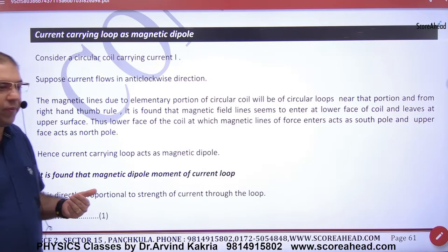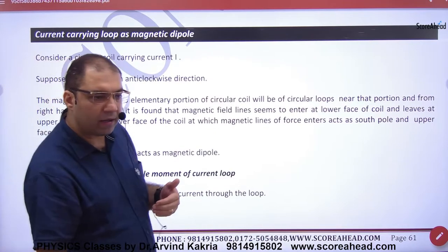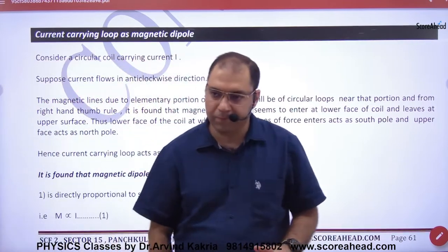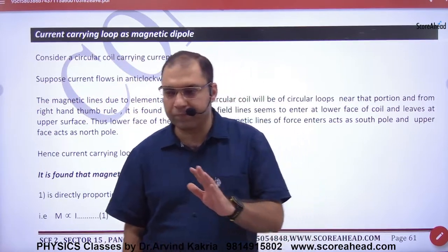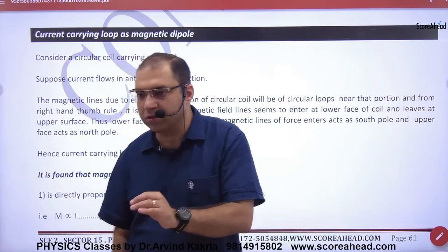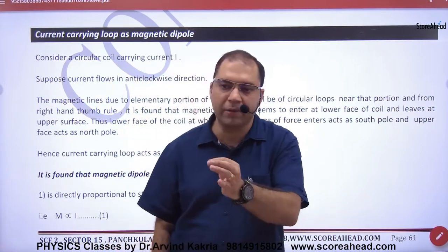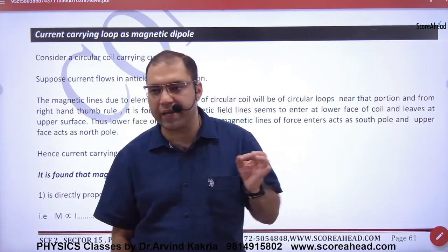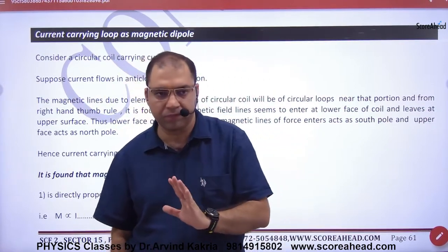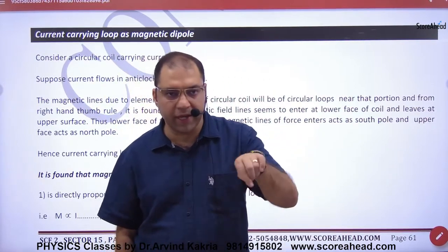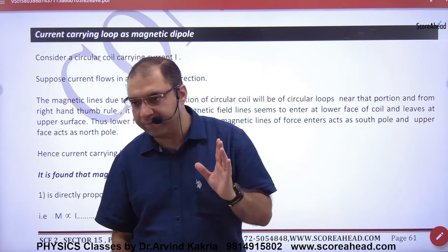Current-carrying loop as a magnetic dipole. Suppose you have a current-carrying loop — there is a ring and there is a current.